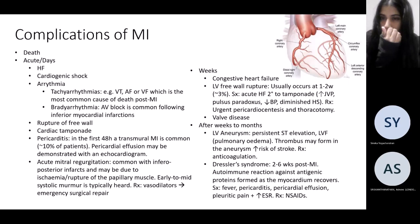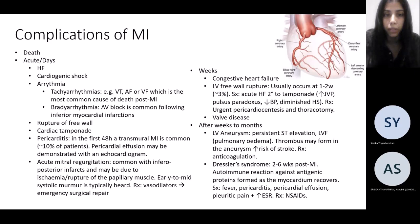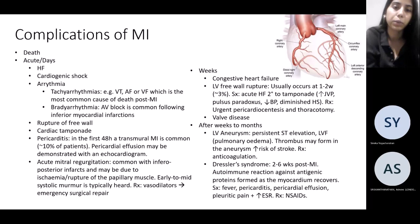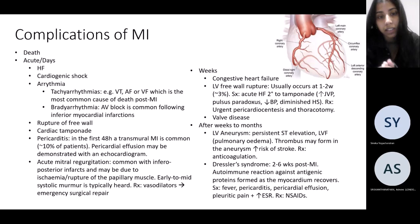For revision, think of complications split into acute and mid-to-long term. Acute complications: acute pulmonary edema or heart failure, cardiogenic shock, arrhythmias — often ventricular arrhythmias such as VT or VF, which is the most common cause of death post-MI. You can also get bradyarrhythmias with AV block, especially with inferior MIs because the RCA supplies the SA node.